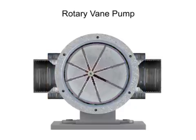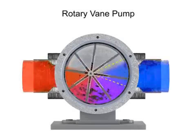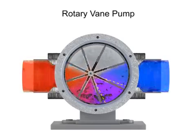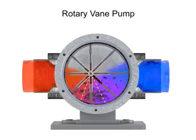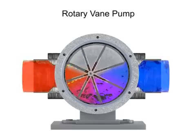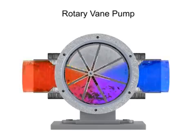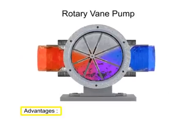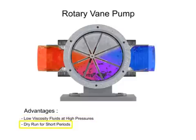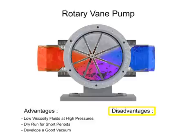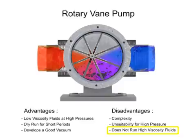Fluid enters at the largest chamber. As the vanes rotate and retract, the chambers get smaller, forcing fluid to exit through the discharge port. The advantages of vane pumps are that they can handle low viscosity fluids at relatively higher pressures, can dry run for short periods, and develop a good vacuum. Their disadvantages include complexity and their unsuitability for both high pressure and high viscosity fluids.